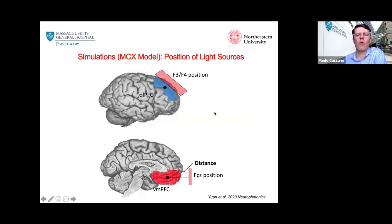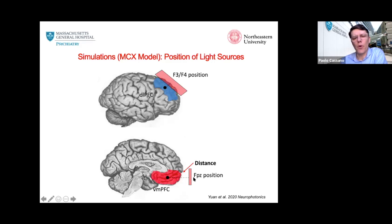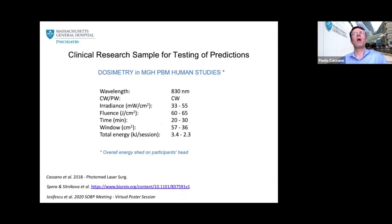Light source locations in our simulation were placed over F4, F3, and over FP1 and FP2 — standard EEG electrode points. When placing the device at F3 or F4, it sits higher on the head; when placed at the frontal pole aiming at the ventromedial prefrontal cortex, the distance from source to target is much greater than when using higher sites close to the hairline.